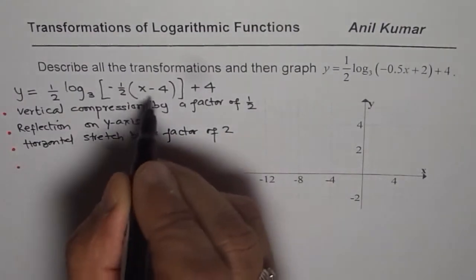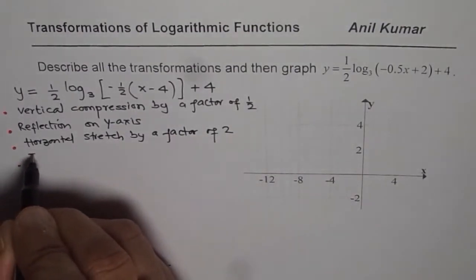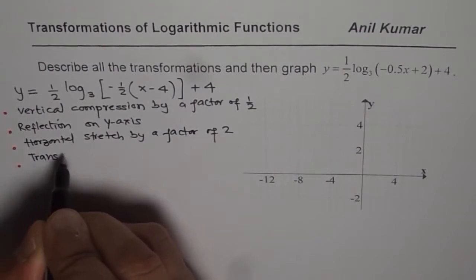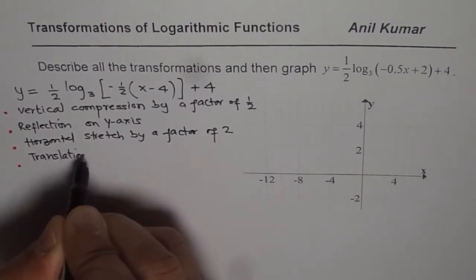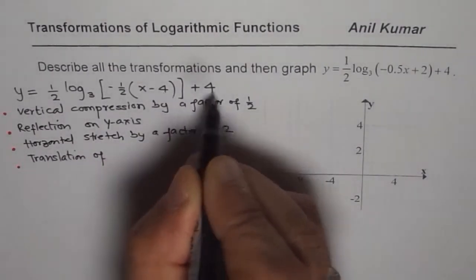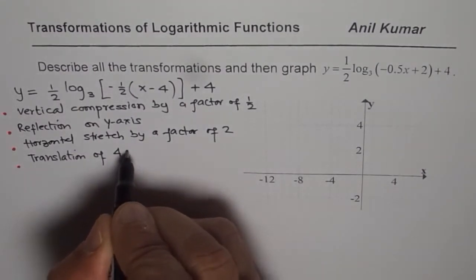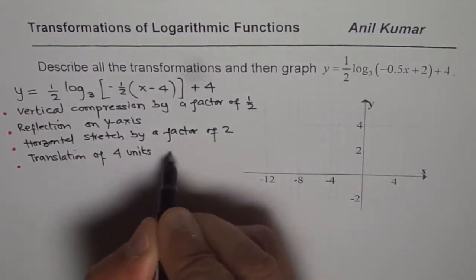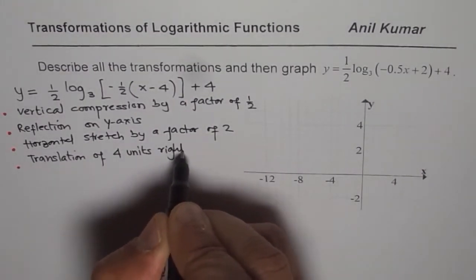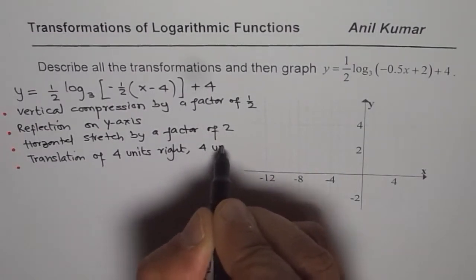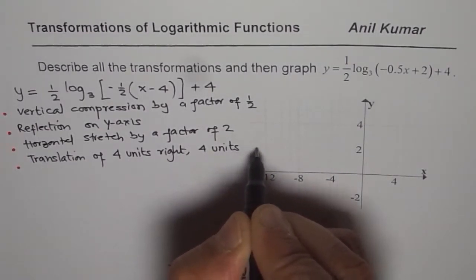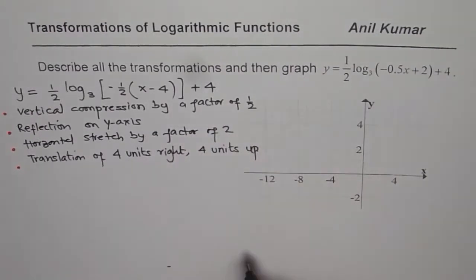And then translation of, we can write translation of 4 units right, that is horizontal, 4 units right and 4 units up. So these are the transformations.